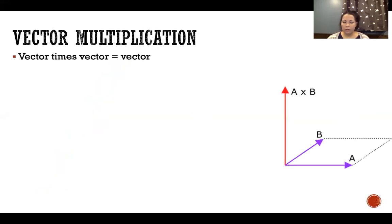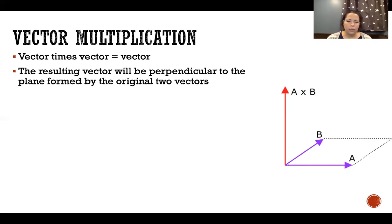Now if we're going to multiply a vector times a vector, the result is also a vector. In this case, we would look at the plane that is formed by the two vectors we're multiplying, and